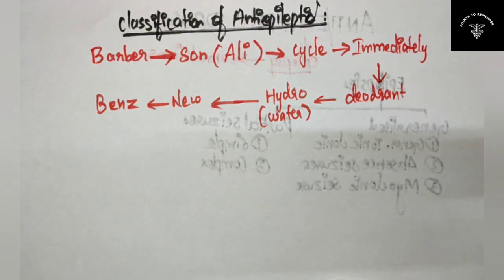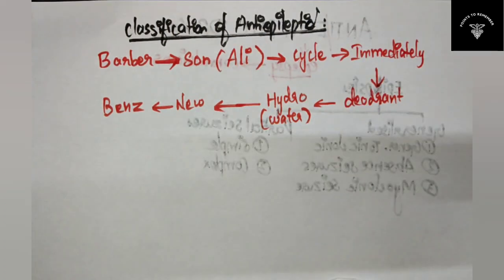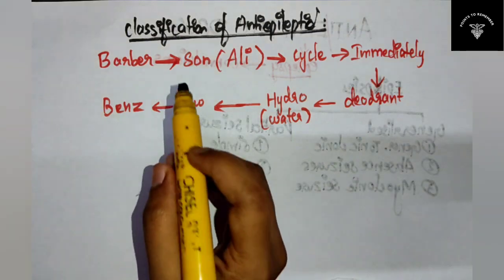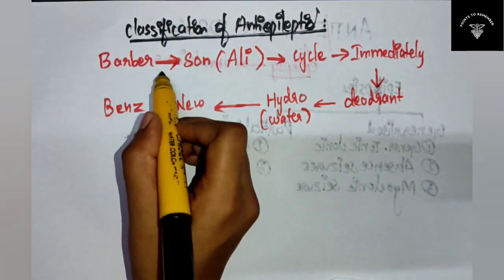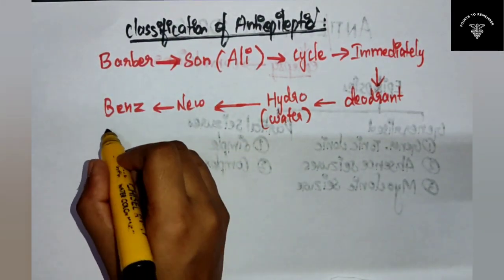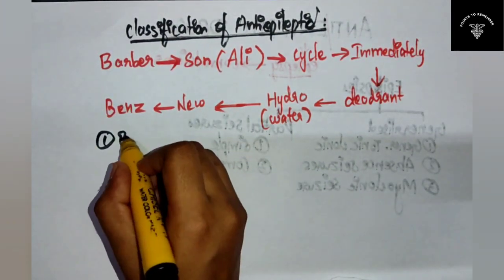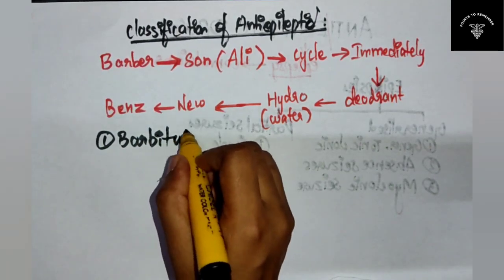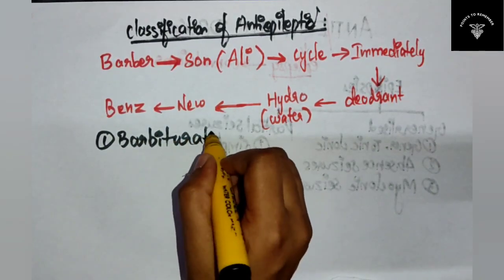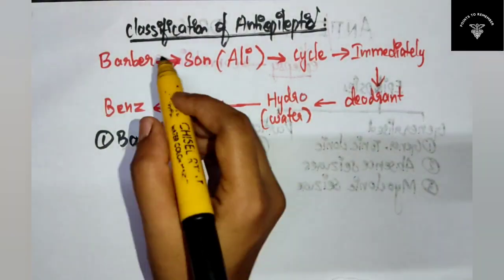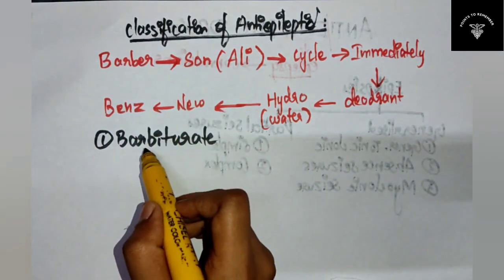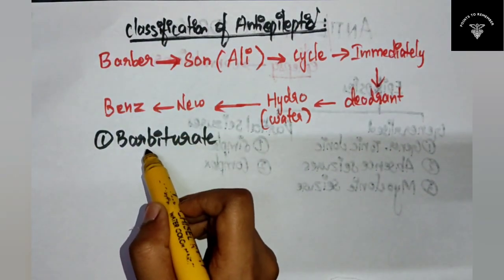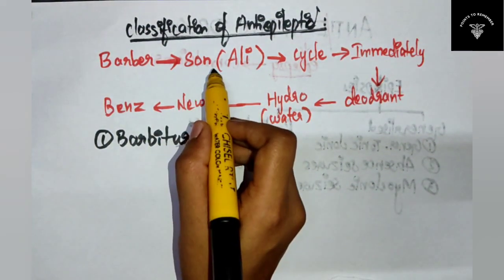Now let's connect the story to the drugs. First is the barber - you have to write that as barbiturate. And next is the son - it starts with S, so you write it as succinamide.